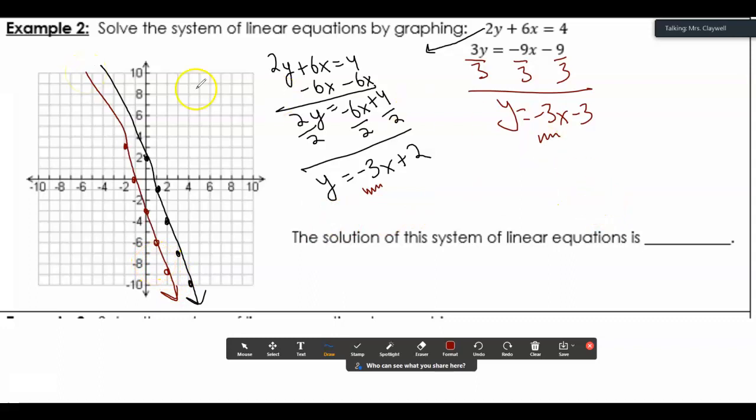So these lines will not intersect, so these are parallel lines. They both have a slope of negative 3, so there's no solution.